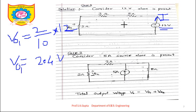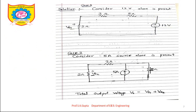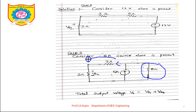Now case 2: the 5A source is present and the 12V source is short-circuited. In this circuit, the 3Ω and 2Ω resistors are in series (the same current flows through both), giving a combined resistance of 5Ω. We now have this 5Ω (series combination) and another 5Ω resistor in the circuit.